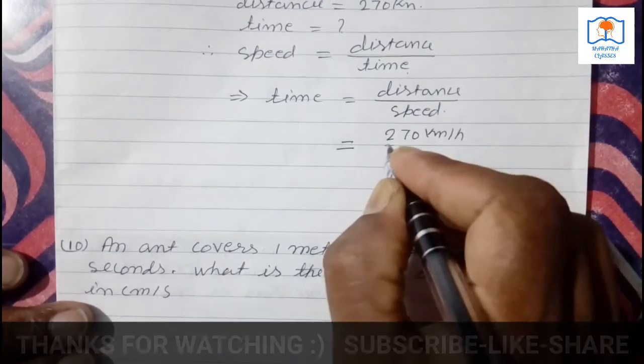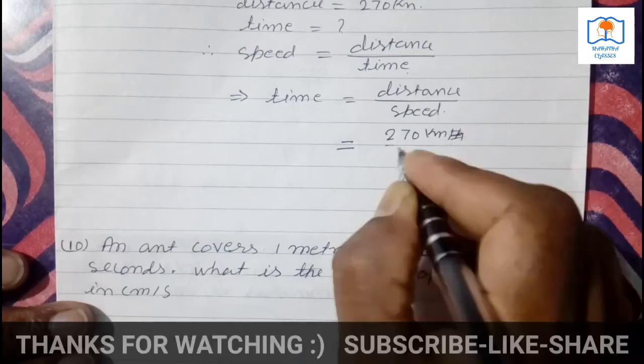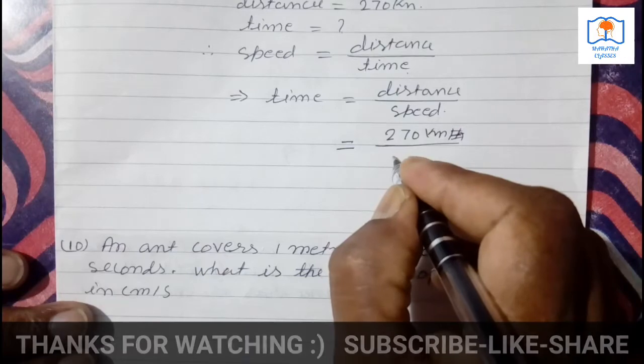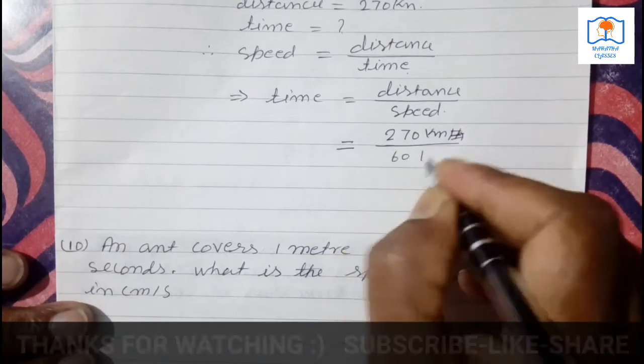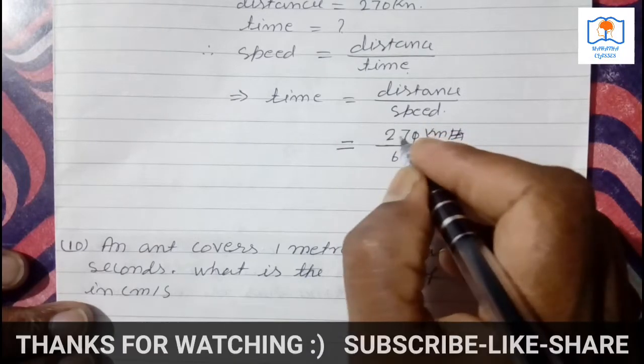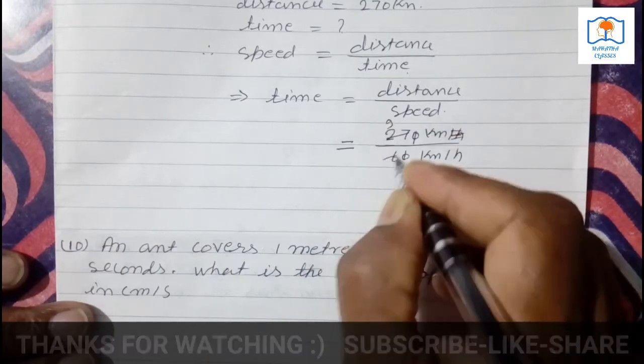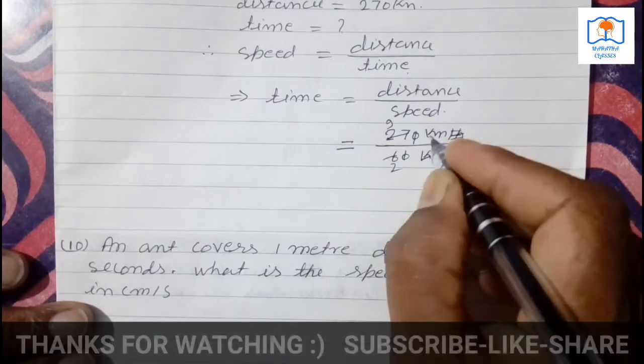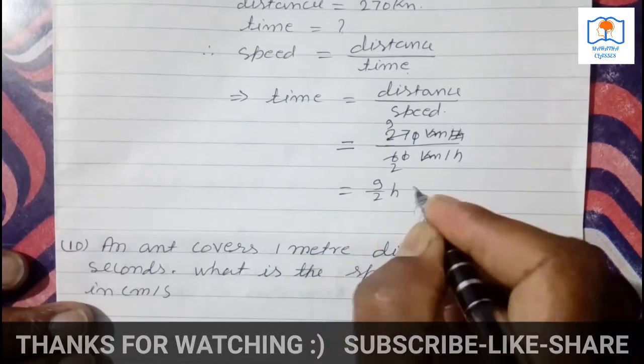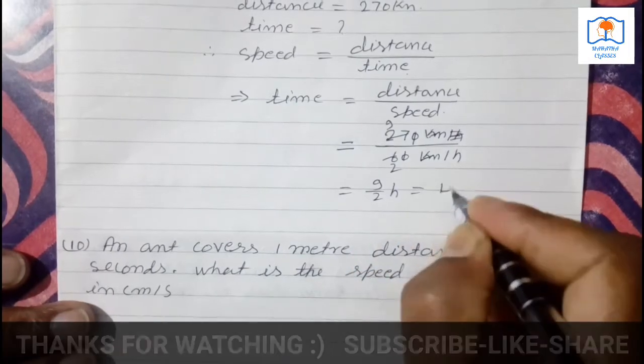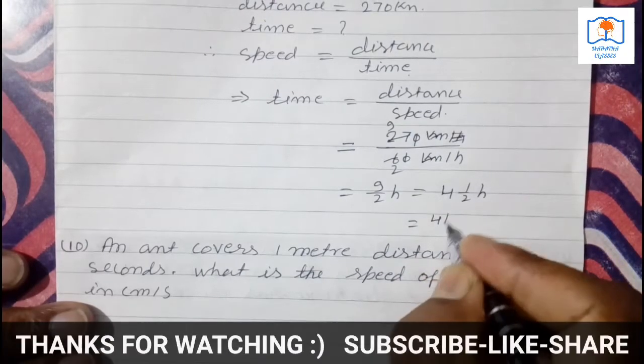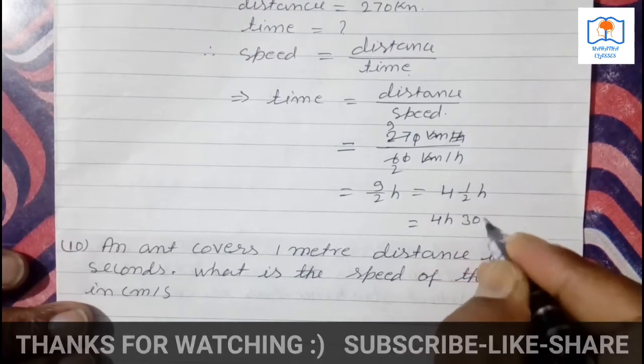270 km divided by 60 km per hour. Zero-zero will cut, 27 divided by 6. 9 divided by 2 is 9 by 2 hours, which is 4 and a half hours. Convert to minutes: 4 hours and 30 minutes. Next question number 10.